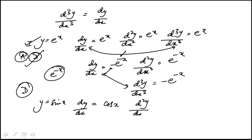Second derivative is going to be minus sine x, and then third derivative is going to be minus cosine x.